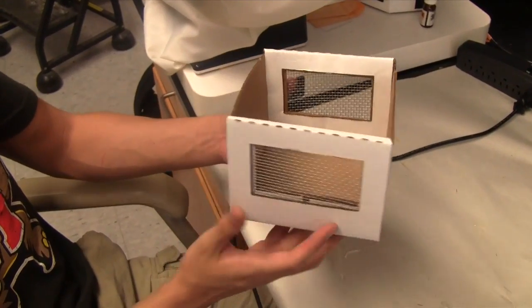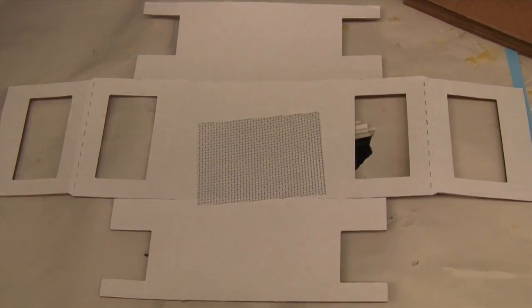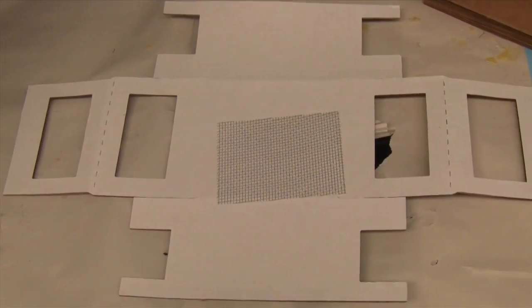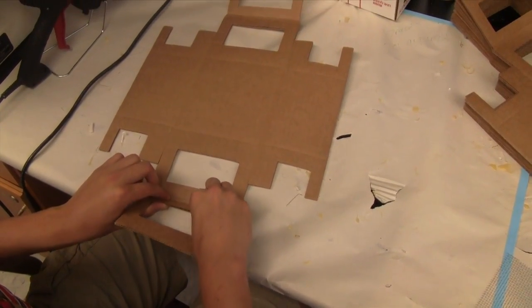We will begin with the construction of the bottom box. The bottom box can be identified by the lack of red writing on the outside of the template. To begin, place the template in front of you with the white side down.